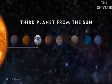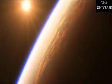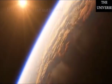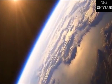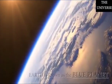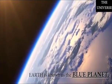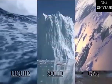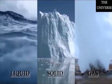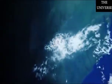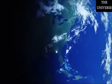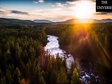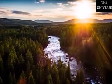Earth receives a sufficient amount of sunlight, therefore it is neither too hot nor too cold. Earth is known as the blue planet due to the abundance of water in all its three forms: liquid, solid, and gas. About 71% of the total surface of the Earth is covered with water in the form of lakes, rivers, oceans, etc.